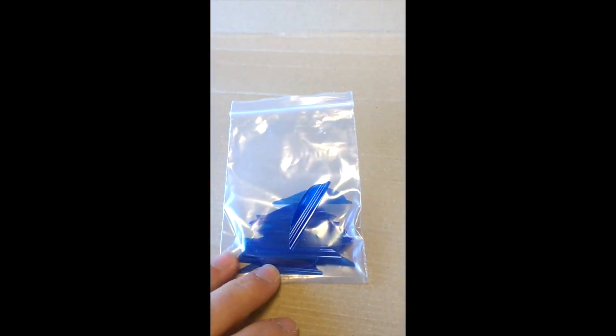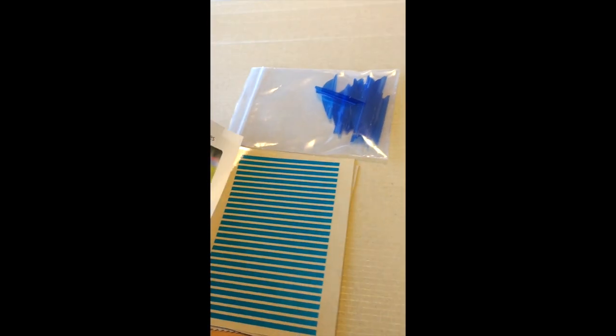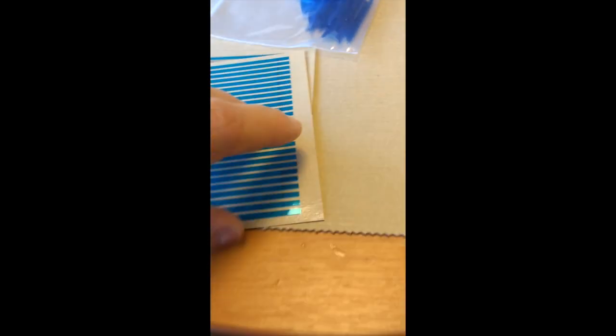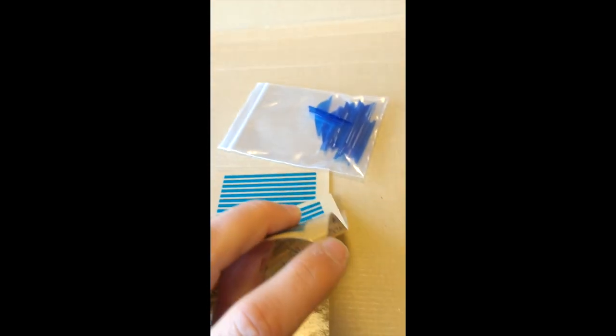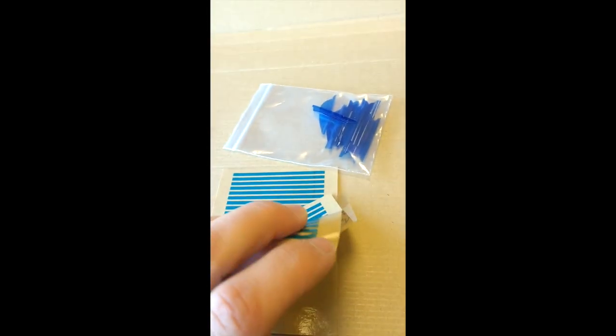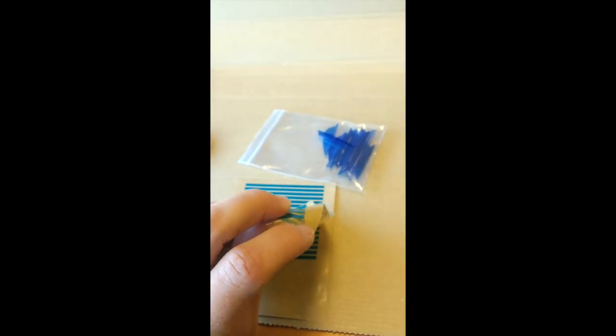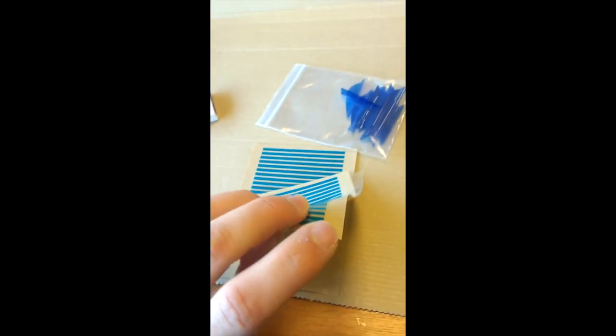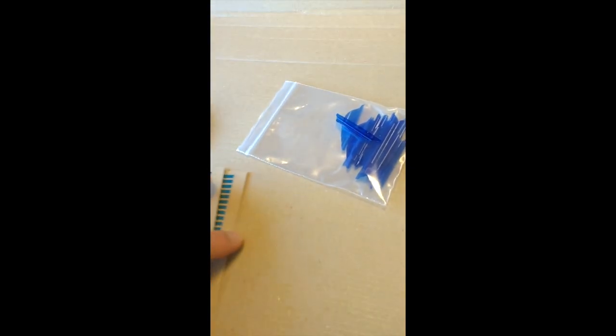You get a packet of vanes, and tucked away inside the instructions is the tape for affixing the vanes. One thing I'll say about the tape - they have this handy tab at one end, if you can see that there, so you can get hold of the tape and remove it from the packaging and place it on the arrow more easily, without getting everything stuck to your fingers. That's quite a nice feature.